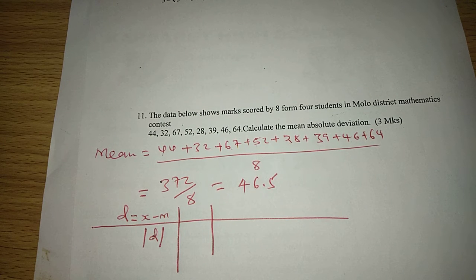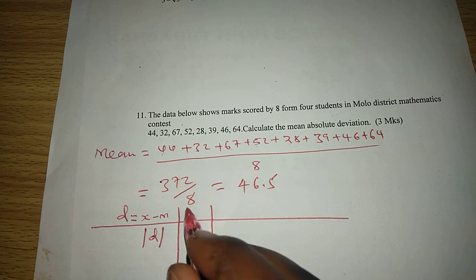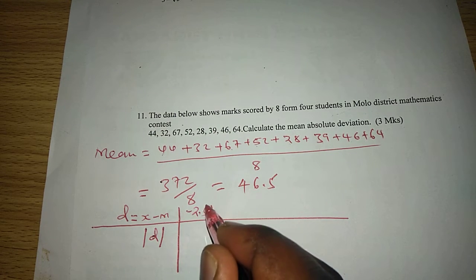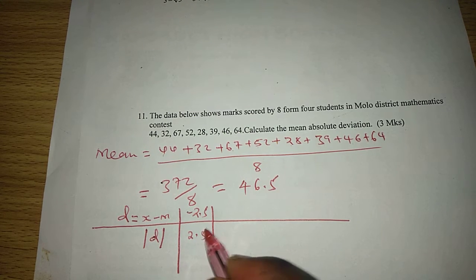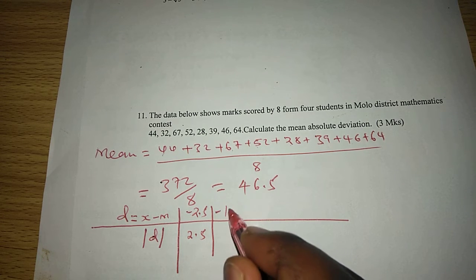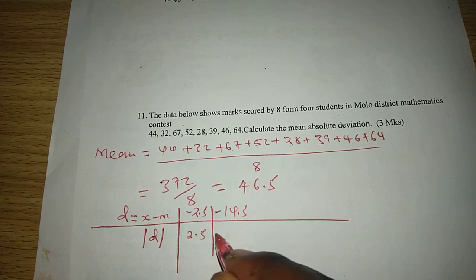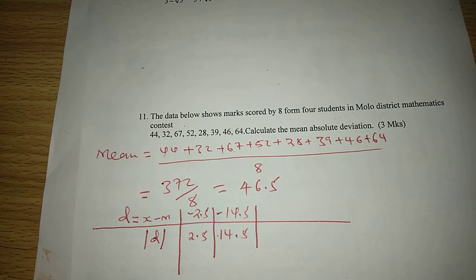So the first deviation will have 44 minus the mean, which will be negative 2.5. The absolute value of this is just 2.5, the deviation without a negative sign. 32 minus 46.5 gives us negative 14.5, and the absolute value is 14.5. The next one is 67 minus 46.5. We get 20.5, which is just 20.5.